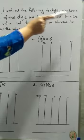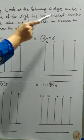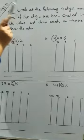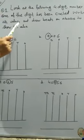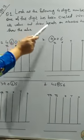We will solve this question so you understand place value correctly. Look at the following four-digit numbers. One of the digits has been circled. Write its value and draw beads on the abacus to show the value.